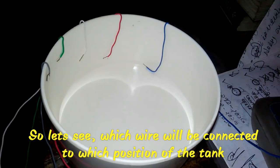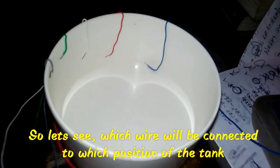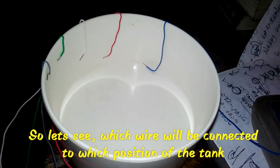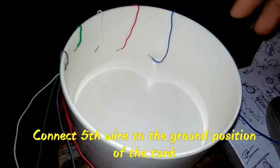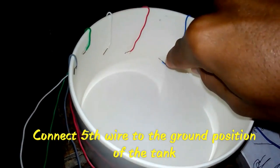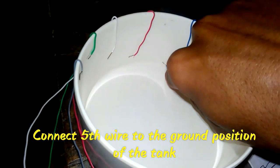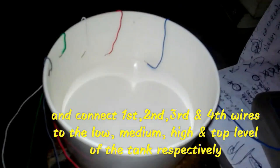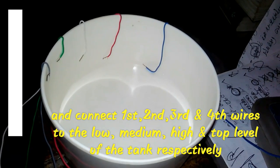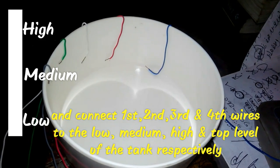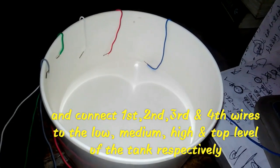Let's see which wire will be connected to which position of the tank. Connect the fifth wire to the ground position of the tank, then connect first, second, third, and fourth wires to the low, medium, high, and top level of the tank respectively.